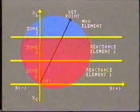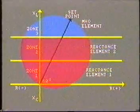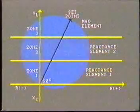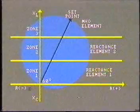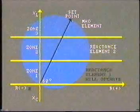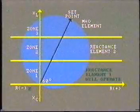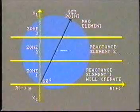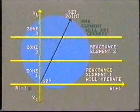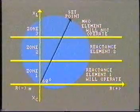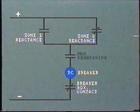The permissive contact will only close when the impedance falls within the circle. If the fault is upstream, the reactance relay will operate. But its tripping circuit will be incomplete, because the Mho relay will not have operated, and the permissive contacts remain open.